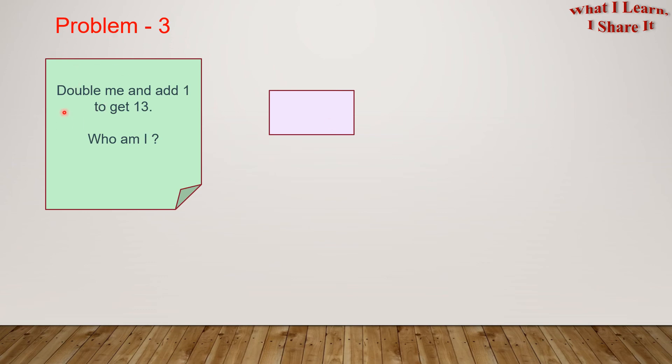Problem 3. Double me and add 1 to get 13. Who am I? We have to find a number which, when doubled and added with 1, becomes 13. Let this box represent the number we are trying to find here. Then we double this number and add 1. If we remove 1, then this will become 13 minus 1 equals to 12.